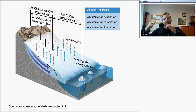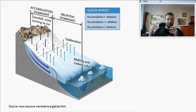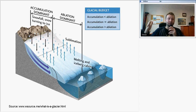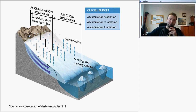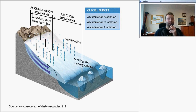In winter, glaciers usually grow because there is accumulation and no melting. But during summer, when it melts, in some parts the snow can stay throughout the year, while in lower places it won't stay. So we have different parts of the glacier: the accumulation zone and the ablation zone.